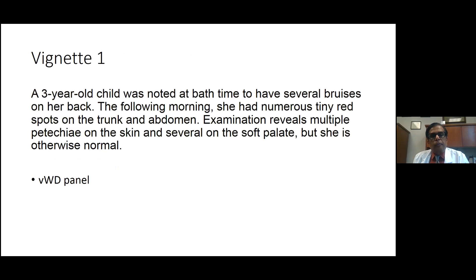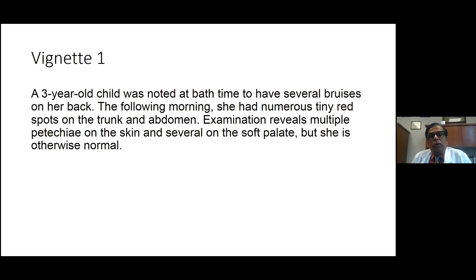In vignette one, we have a three-year-old child noticed at bath time to have several bruises on her back. The following morning she had numerous tiny red spots on the trunk and abdomen. Examination revealed multiple petechiae on the skin and several on the soft palate, and she is otherwise normal. CBC shows a white count of 5.8, hemoglobin of 12.9, hematocrit of 37, platelet count of 7,000, with a normal differential. PT, PTT, and INR are all normal. Direct Coombs test was normal, and all blood chemistries were normal.